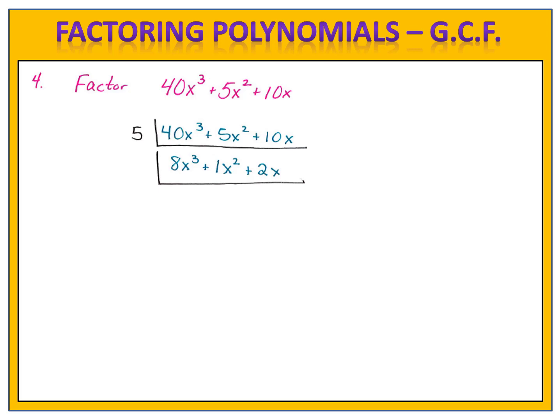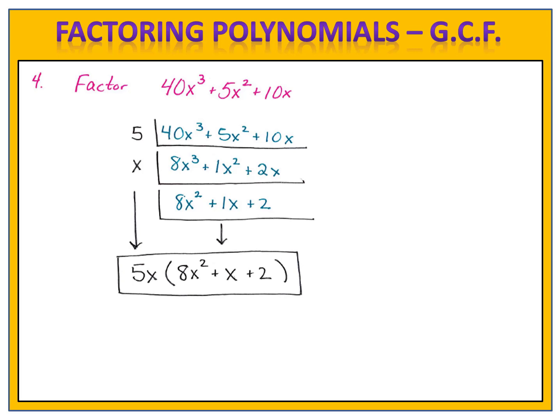So now I set my sights on the variables. I have x to the third in the first term, x to the second in the second term, and x in the third term. All of the terms have x's, so I can factor some x's out. The smallest exponent on the x's is x to the first, so I factor out the single x and divide each term by x. I re-examine my terms and see that no numbers divide 8, 1, and 2 in common, and only the first two terms have x's — the third one does not. I can now write my polynomial in factored form: 5x on the outside, and 8x squared plus x plus 2 on the inside.